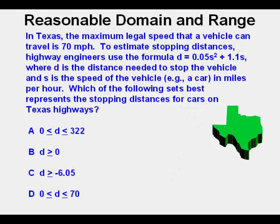Let's look at our last problem today. In Texas, the maximum legal speed that a vehicle can travel is 70 miles per hour. To estimate stopping distances, highway engineers use the formula D = 0.05S² + 1.1S